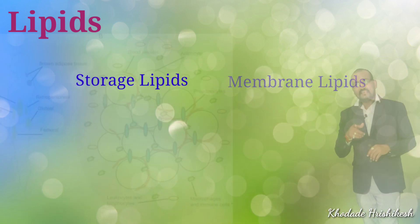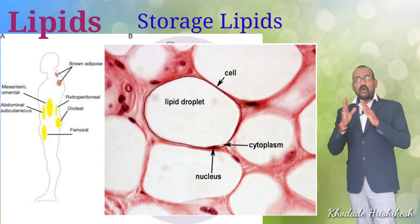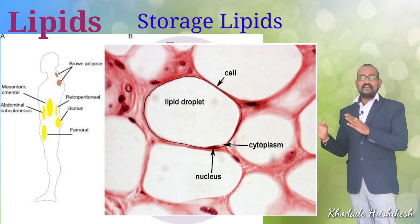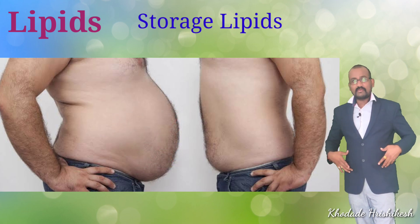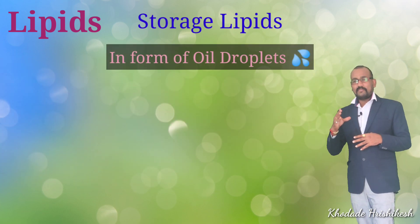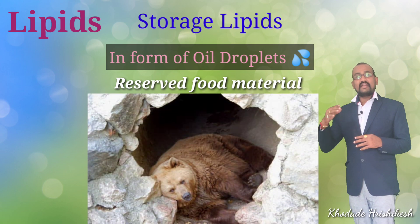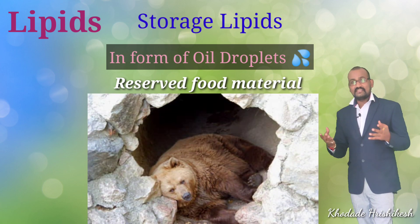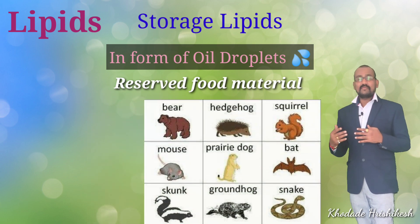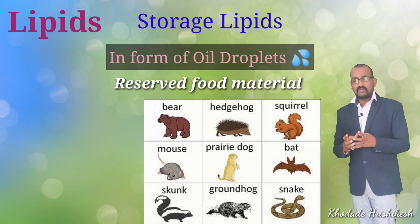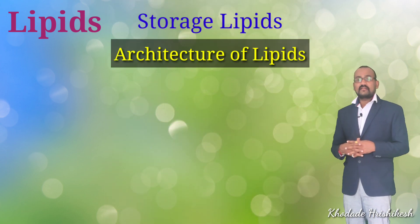Lipids are stored in human beings in the form of oil droplets — in common language, lipids are simply oil or fat. In humans, lipids are stored as oil droplets in the adipose tissue, particularly in the stomach area in males. These oil droplets serve as reserved food material. Many hibernating organisms, such as bears, use these lipids to store food for a duration of six months during their hibernation period. Lipids perform this storage role in many organisms, and also serve as membrane constituents.